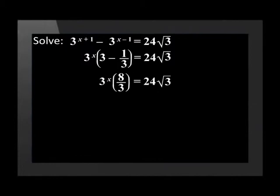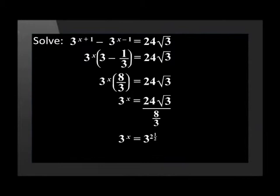If we simplify the bracket with the calculator we get 8 over 3. To solve for x, we divide both sides by 8 over 3 to get 3 to the power of x is equal to 3 to the power of 2 and a half. Again, because the bases are the same, we know that the exponents are the same value. So x is equal to 2 and a half.